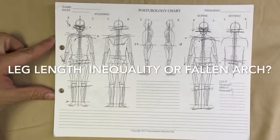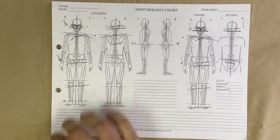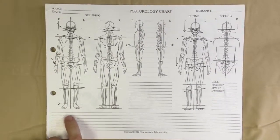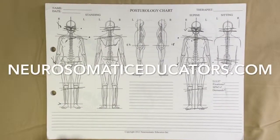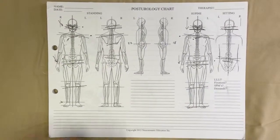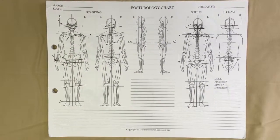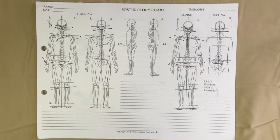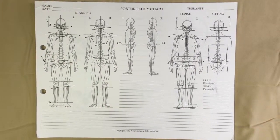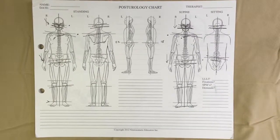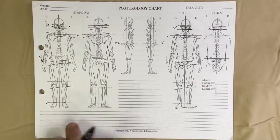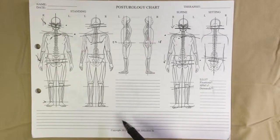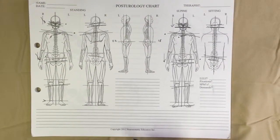Hey guys, Tim Janik here. This is an actual chart of a client that one of their therapists, David, is working with. He was questioning whether this client had a leg length inequality or not. We're not actually showing an image of the client — this is going off of what he saw — but we can still use the charting to show you how we determine if somebody possibly has a leg length inequality.